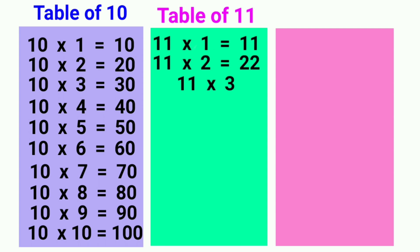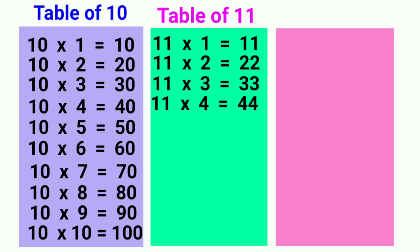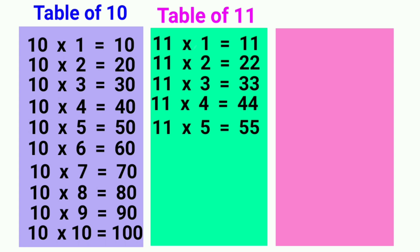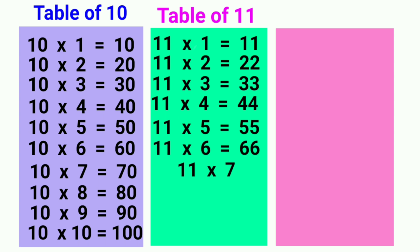11 threes are 33, 11 fours are 44, 11 fives are 55, 11 sixes are 66, 11 sevens are 77,